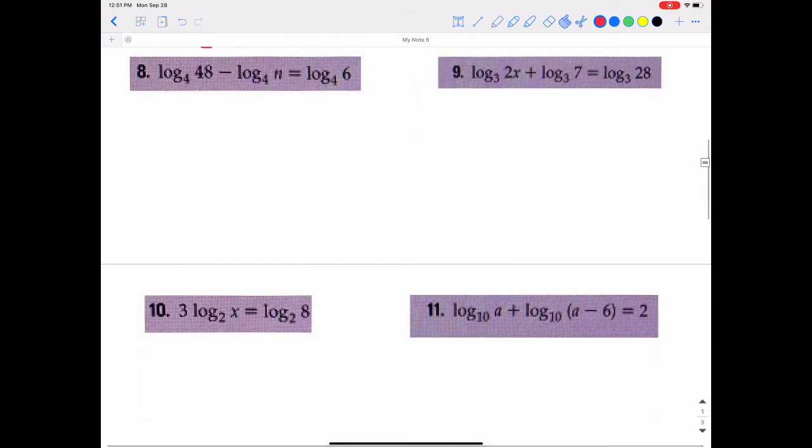So this is log base 4 of 48 minus log base 4 of n equals log base 4 of 6. On the left side, we're going to condense that to a single logarithm. Since it's the subtraction of two logs, that is the equivalent to the division of a single log.